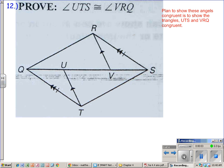All right, good evening everybody. This is a video just to try to guide you along on some of the proofs for section 4.6. This is problem number 12. You are trying to prove that those two angles are congruent, angle UTS and angle VRQ.